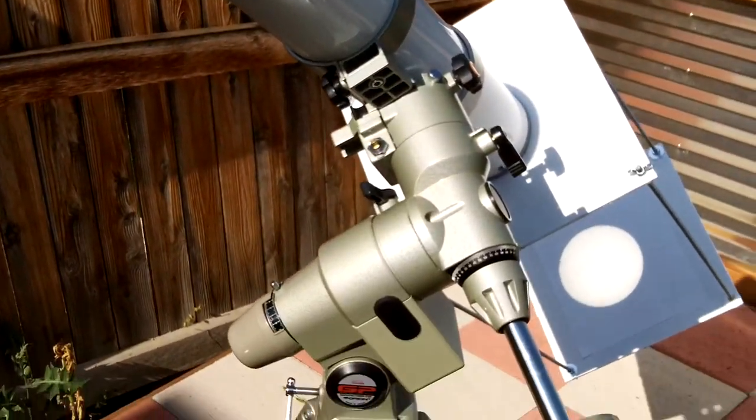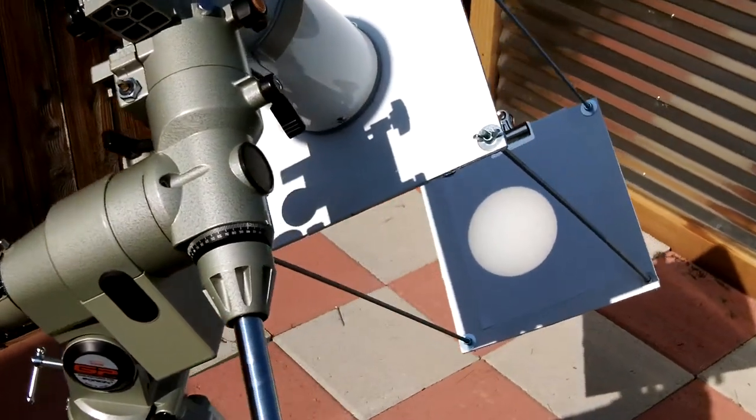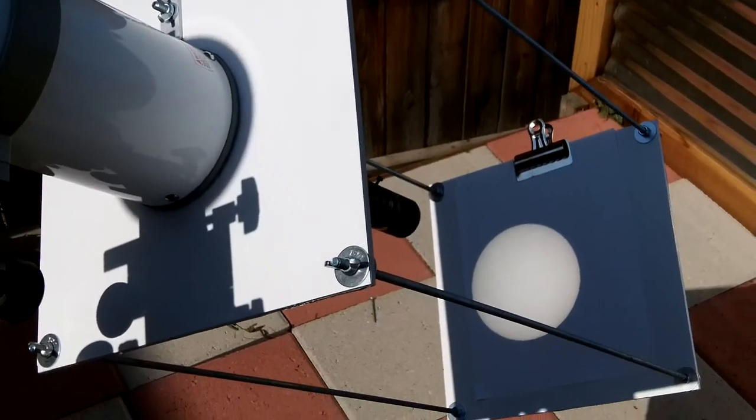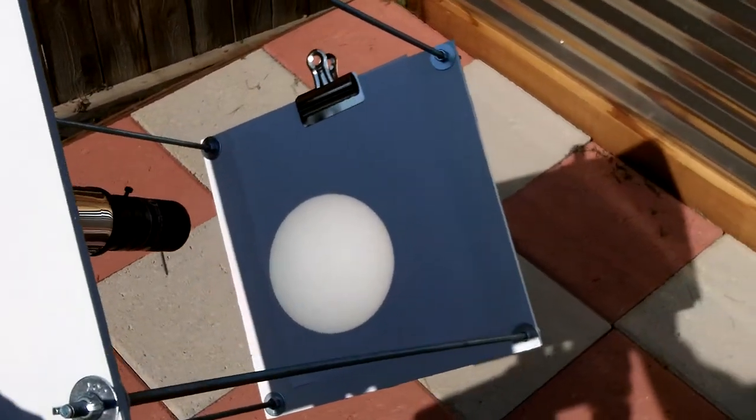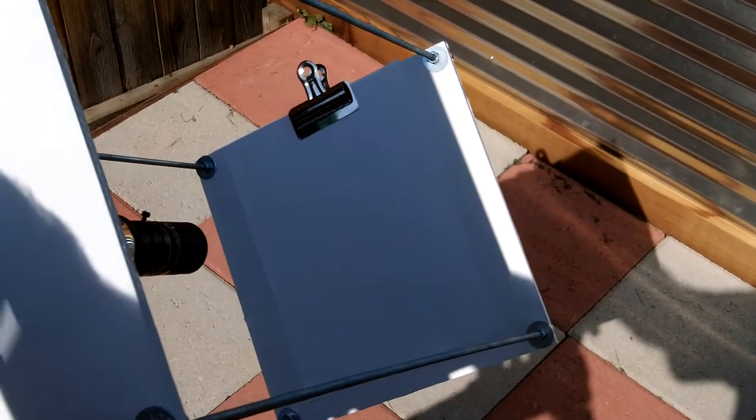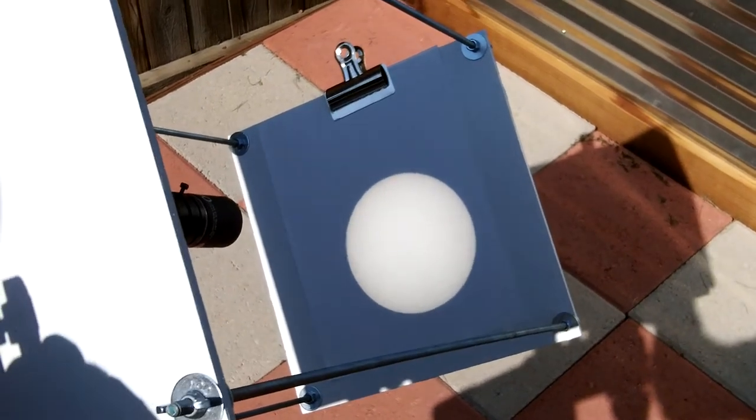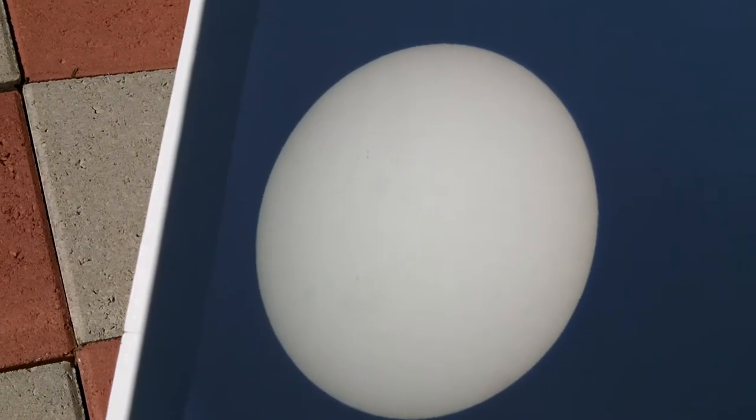We have the scope out here on the observing pad and have the projection box attached as I've shown you earlier. And in order to point it at the sun in a safe way, I actually look at the shadow that's being cast behind everything. And what I do is I try to minimize that. That way you don't have to look at the sun at all. And there you go. So right there you can see the image of the sun. And I've also clipped on a piece of paper there. But if you look really close, you can actually see a couple little sunspots right there. And there's a grouping right there. So, again, this is a really safe way to kind of look at the sun's image and see some interesting features there.